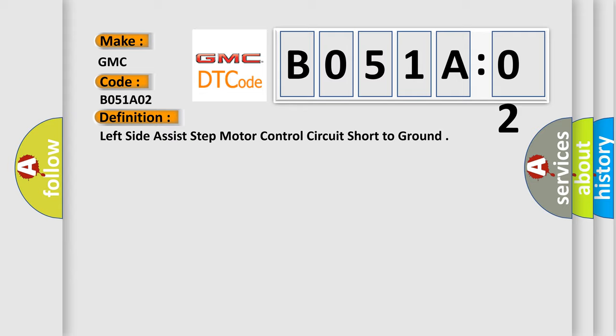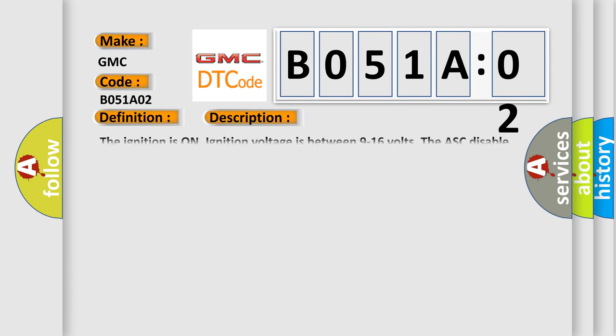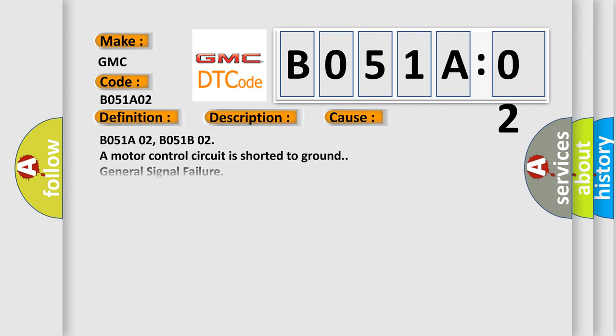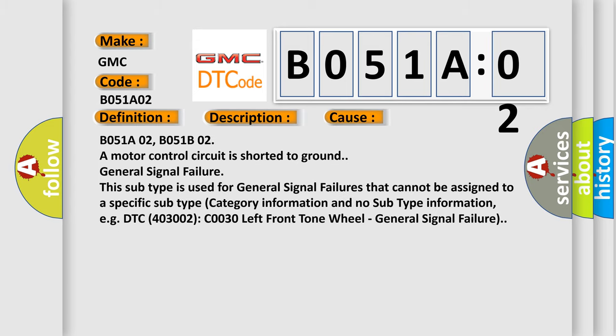Here is a short description of this DTC code. The ignition is on. Ignition voltage is between 9 to 16 volts. The ASC disable switch is not pressed. This diagnostic error occurs most often in these cases.